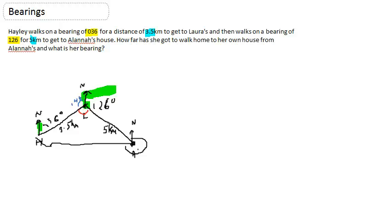In the last video we were looking at the distance from Alana's house back to Haley's house and we discovered that we could use Pythagoras to work that out. When we did, we found out the distance from Alana's house to Haley's house was 6.1 kilometres. We only managed to do that because we managed to prove